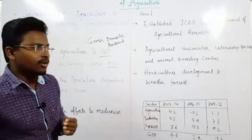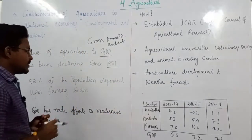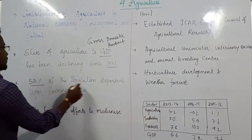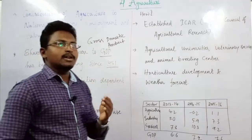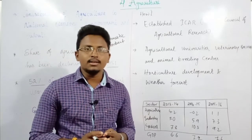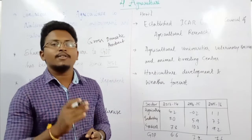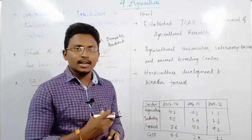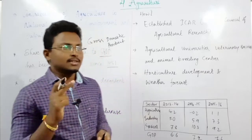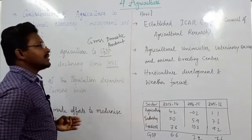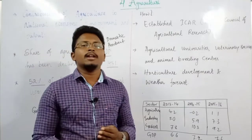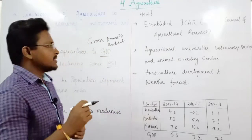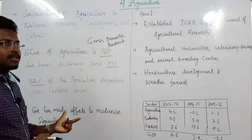When it comes to employment, 52 percent of the population is dependent upon farming or agriculture — that means more than half of the population in the country depends on agriculture. But its contribution to GDP is declining day by day.